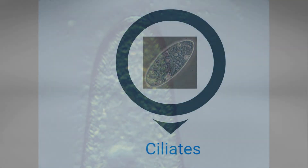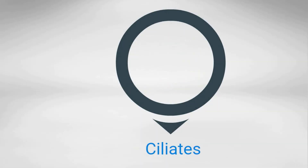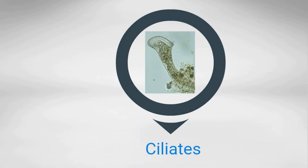Another ciliate is a stentor. It uses cilia to draw food into an opening.